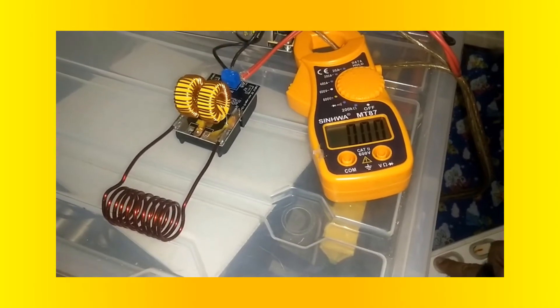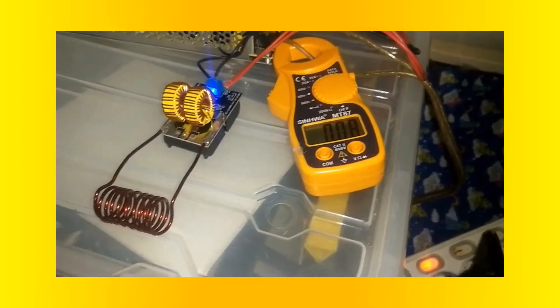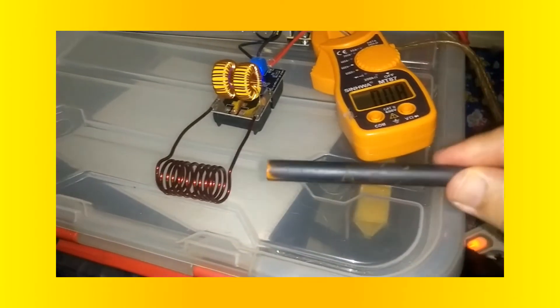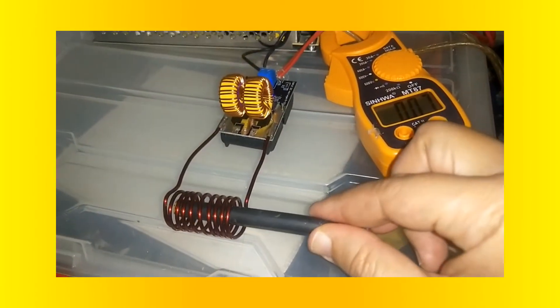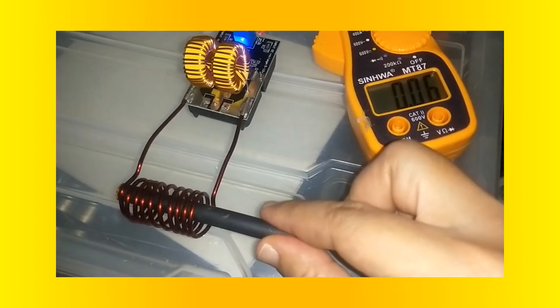When the heating coil is not loaded, the current is 0.08 ampere. Now let's put the ferrite rod into the coil. Surprisingly, the current decreases to 0.06 ampere. Despite this, the ferrite rod gets warmer than before.